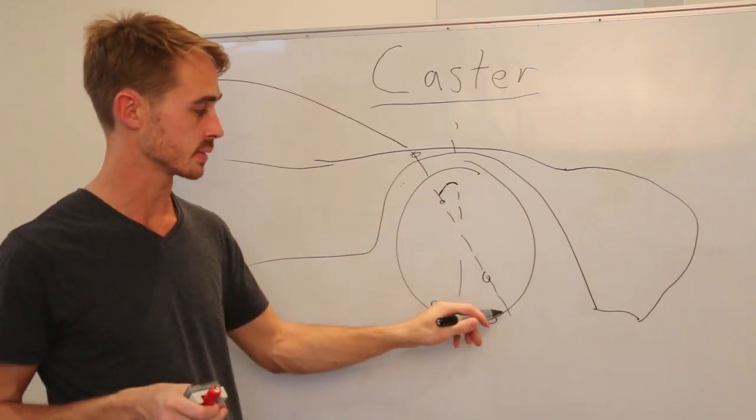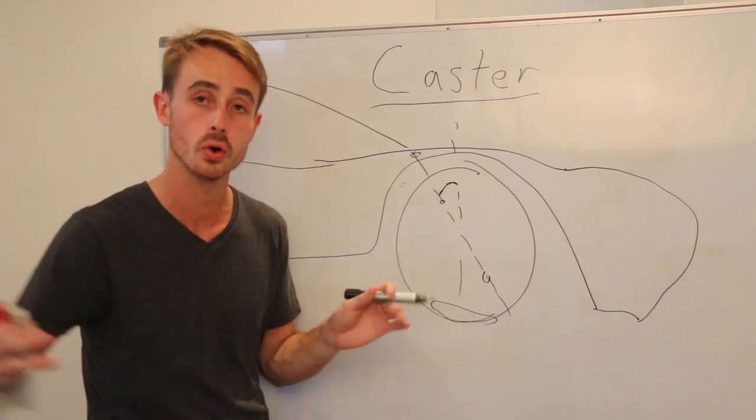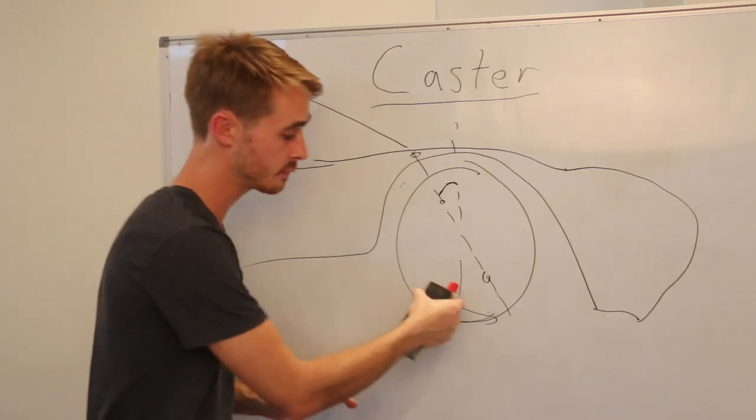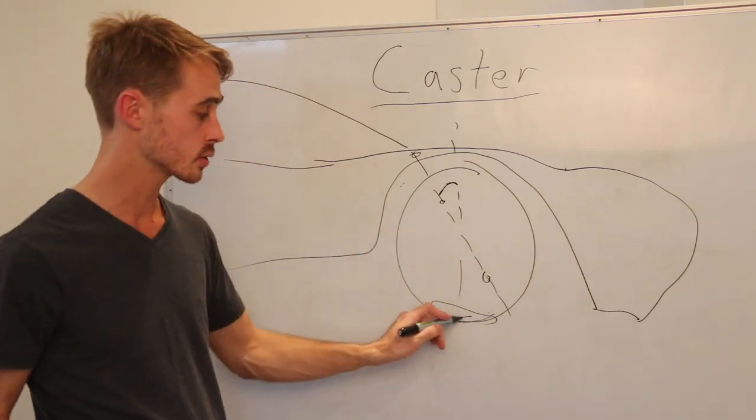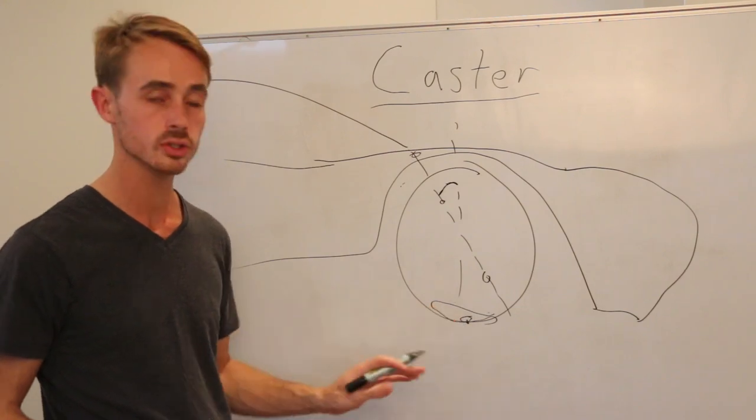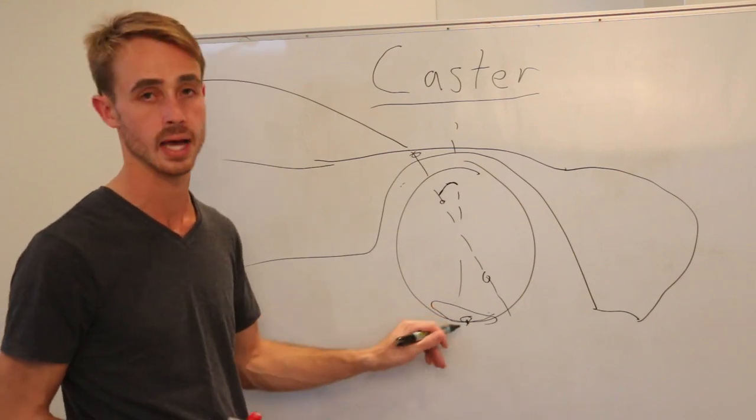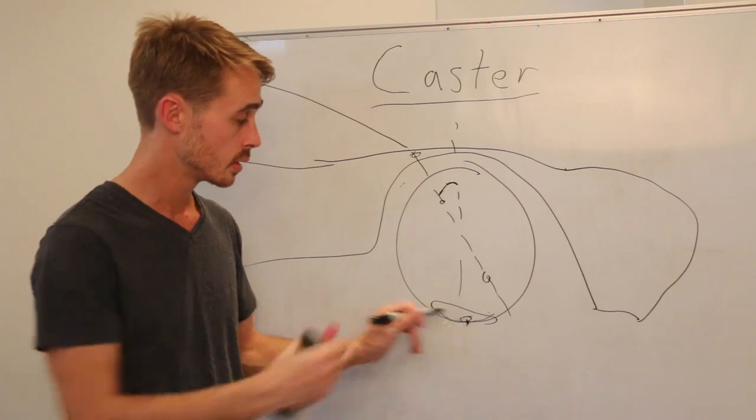Now if we look at this caster axis we can see that if we imagine a car in a corner, lateral grip, side force, so force going into the whiteboard right now, this contact patch is going to be forced that way. Let's just assume that it's at the centre of where the tyre is. So it's pushing there.